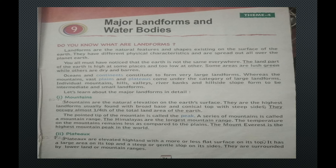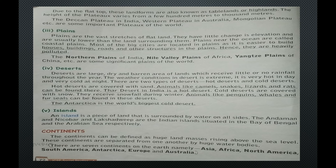Plateaus are elevated highlands with a more or less flat surface on top. They have a large area on top and a steep or gentle slope on their sides. They are surrounded by lower land or mountain ranges. Due to the flat top, these landforms are also known as tablelands or highlands. The height of plateaus varies from a few hundred meters to thousands of meters. The Deccan Plateau in India, Western Plateau in Australia, and Mongolian Plateau are some important plateaus of the world.